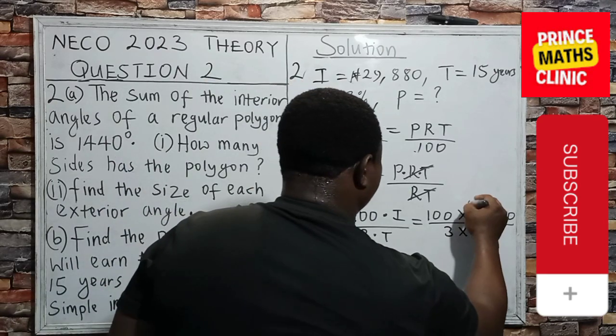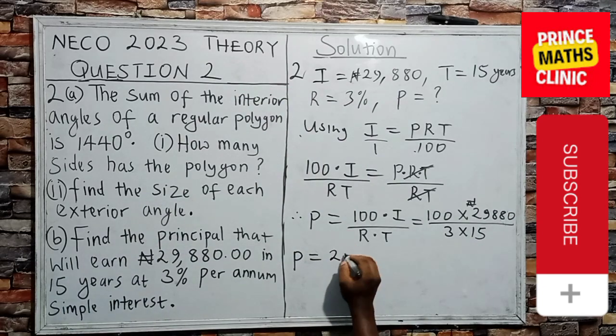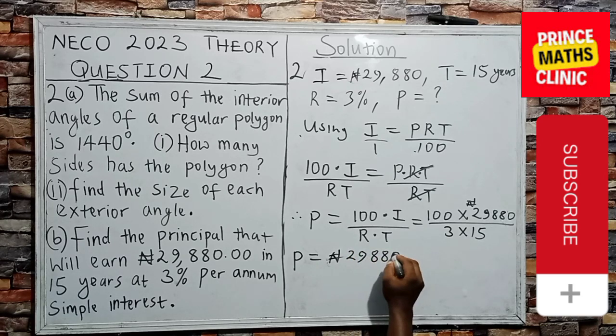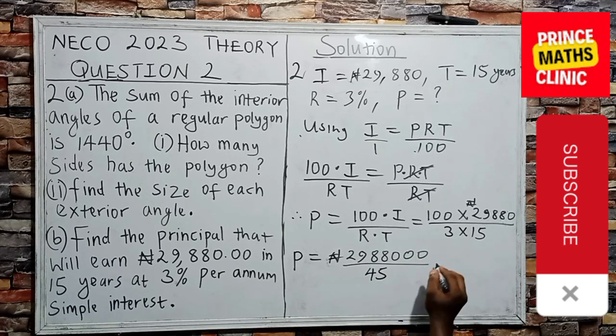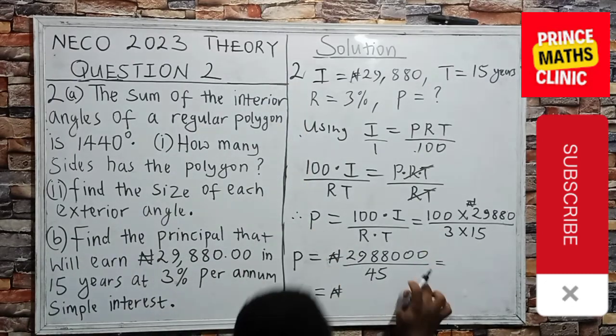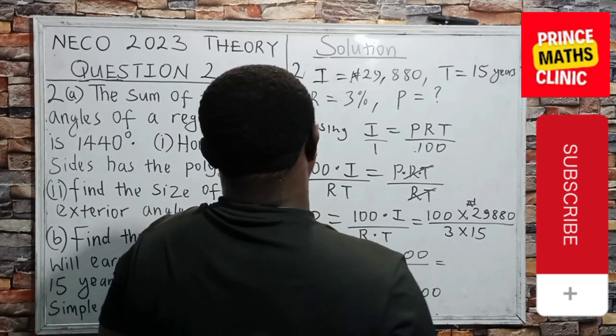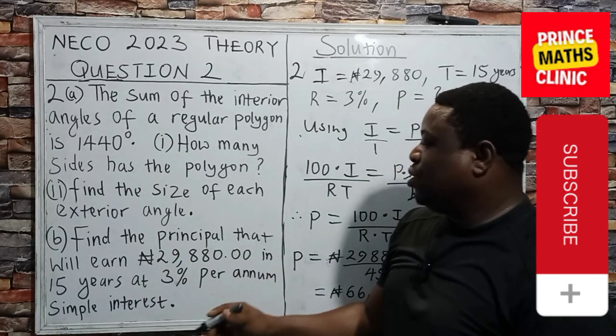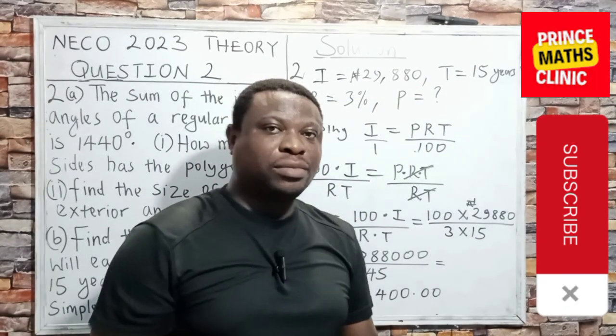Principal, remember, this is naira. If you multiply this together, you have 2,988,000 naira divided by 3 times 15 is 45. If we divide this figure together, we are going to get 66,400 naira. Therefore, we can say that the principal that will earn this amount is 66,400 naira.